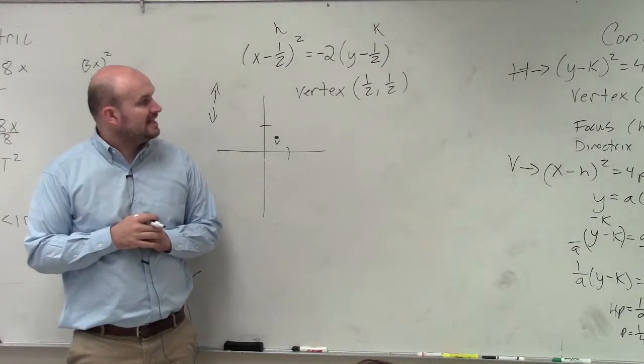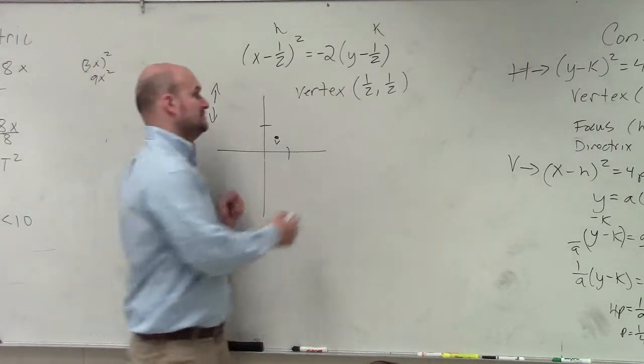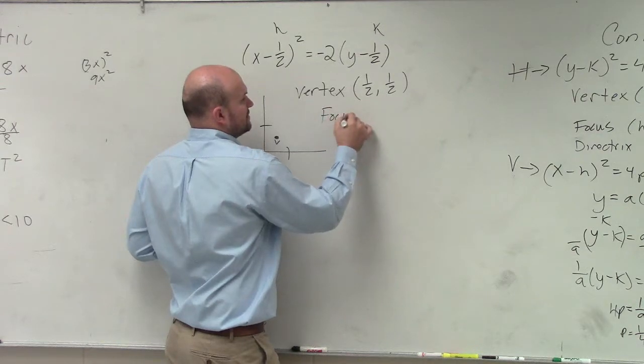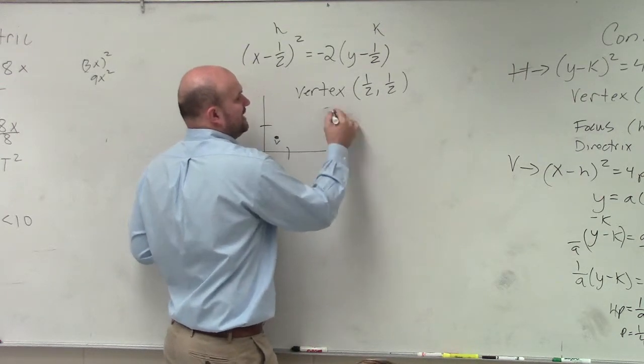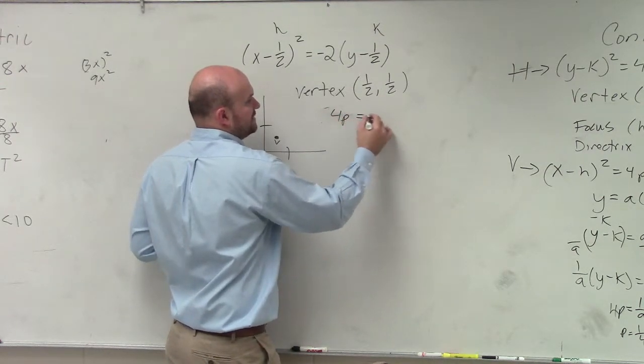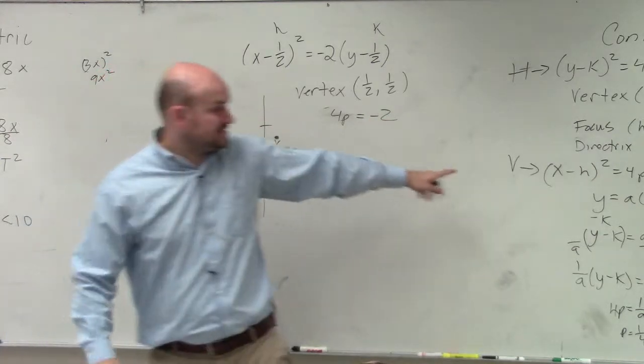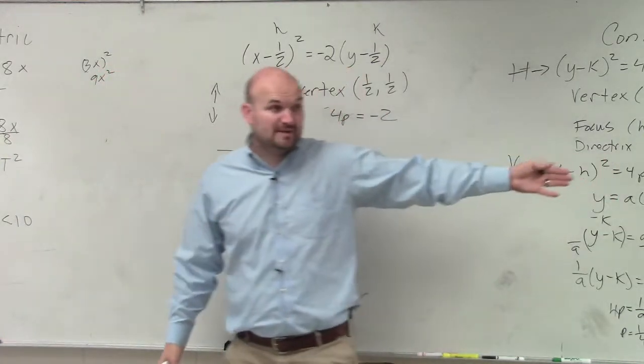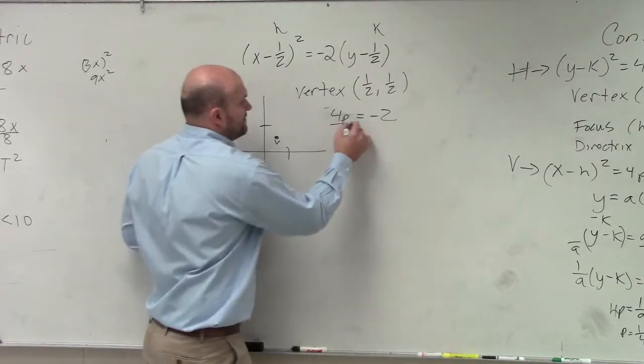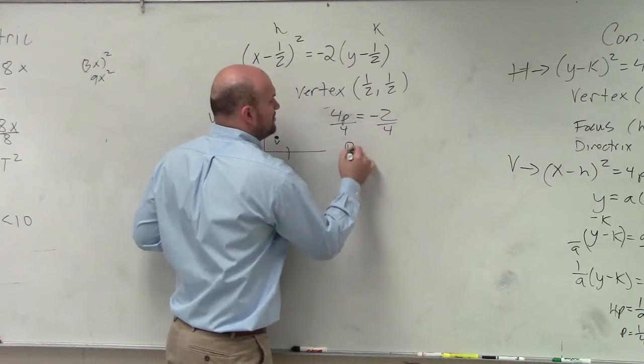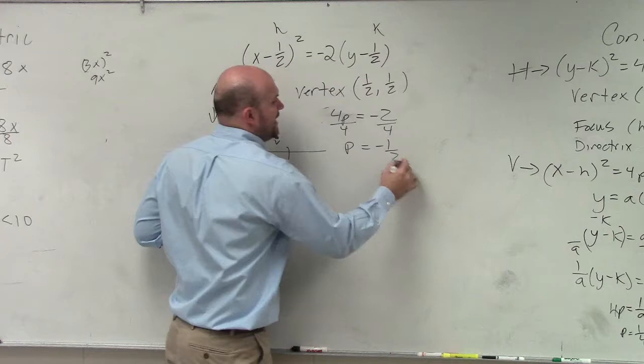Now the next thing is I got to find my p. So focus, I'm sorry, p, 4p is equal to negative 2. Based on my formula, it still has the same coefficient. 4p is equal to negative 2. I divide by 4, divide by 4. p is equal to negative 1 half.